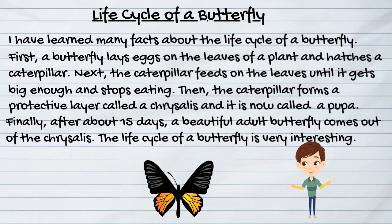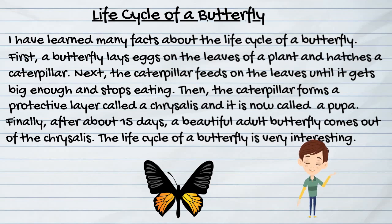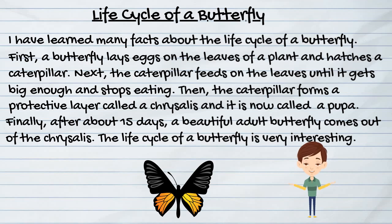The Life Cycle of a Butterfly. I have learned many facts about the life cycle of a butterfly. First, a butterfly lays eggs on the leaves of a plant and hatches a caterpillar. Next, the caterpillar feeds on the leaves until it gets big enough and stops eating. Then, the caterpillar forms a protective layer called the chrysalis and it is now called the pupa. Finally, after about 15 days, a beautiful adult butterfly comes out of the chrysalis. The life cycle of a butterfly is very interesting.